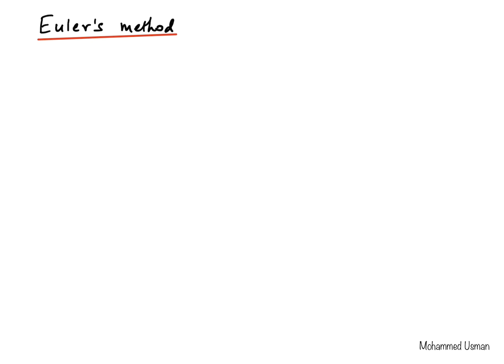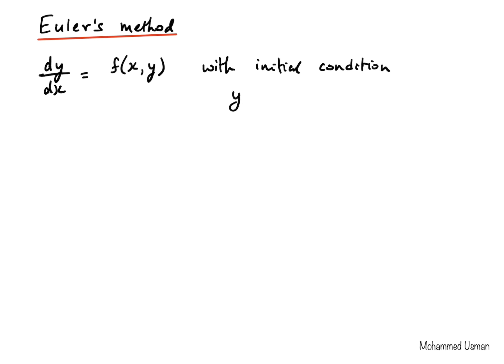Euler's method is a very simple iterative method — we repeat certain calculations for a number of iterations until we get the desired answer. It is used to solve differential equations of the form dy/dx equal to some function of x and y. This is a first order differential equation. We have an initial condition defined as y of x0 equal to y0, where x0 is the initial value of x and y0 is the corresponding value of y.